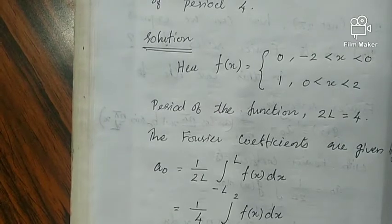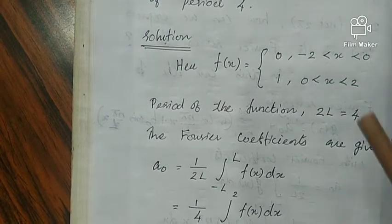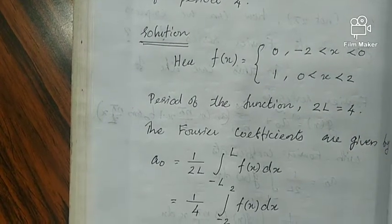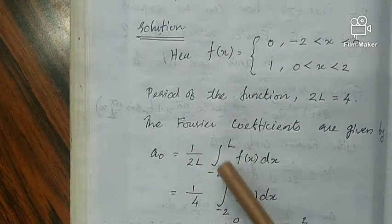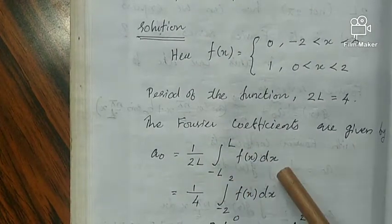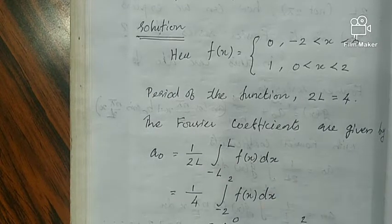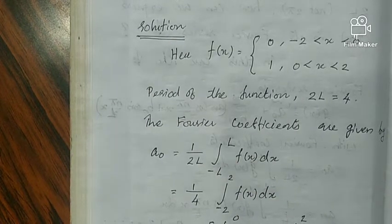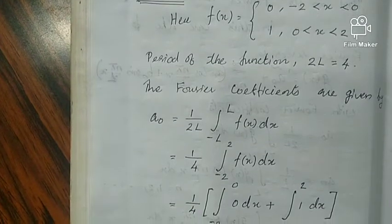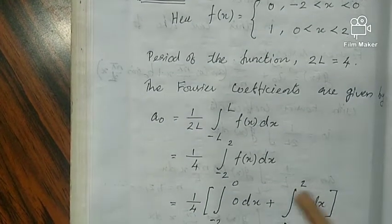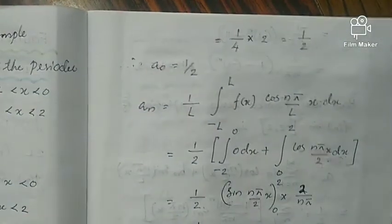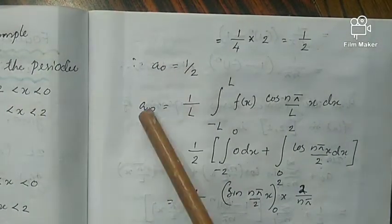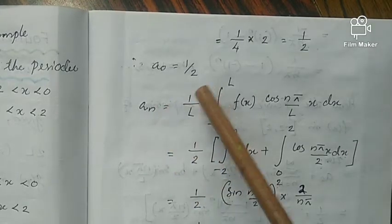Solution: First, we have written whatever the function is given. Next, we are finding a_0. So a_0 = 1/(2L) times integral -L to L of f(x) dx. Doing integration, we get one part is 0 because -2 to 0 the value is 0. The next one is integral 0 to 2 of 1 dx, and we got that as 1/2.